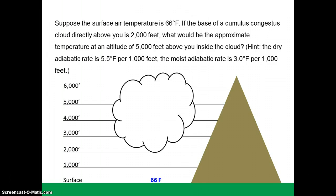The question is, suppose the surface air temperature is 66 degrees Fahrenheit. If the base of a cumulus congestus cloud directly above you is 2,000 feet, what would be the approximate temperature at an altitude of 5,000 feet above you inside the cloud. The dry adiabatic lapse rate is 5.5 degrees Fahrenheit per 1,000 feet and the moist adiabatic lapse rate is 3 degrees Fahrenheit per 1,000 feet.